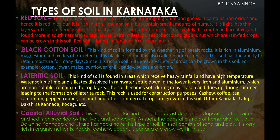Black cotton soil is formed by the weathering of basalt rocks. It is rich in aluminium, magnesium, and iron oxide, which gives it a black color. This soil has the ability to retain moisture for many days. Since it is rich in nutrients, a variety of crops can be grown in it — including cotton, jowar, maize, sunflower, chili, paddy, pulses, and onion.